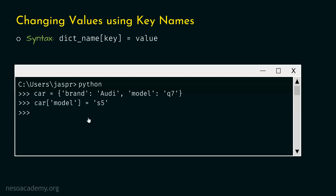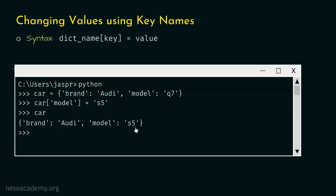Now let's hit enter and check whether the dictionary is updated or not. We can type the name of the dictionary and hit enter. We'll get our updated dictionary with model as S5. I hope it is clear how to change a specific value using its key name.